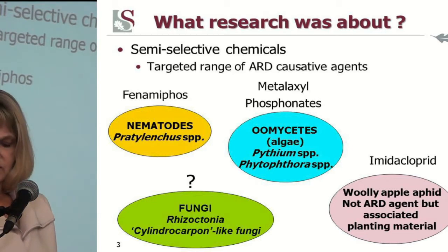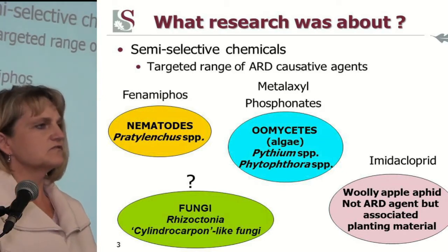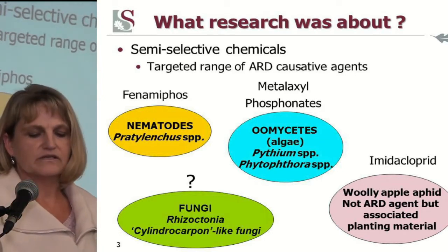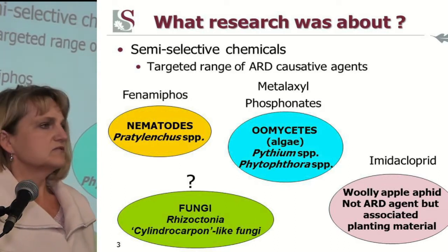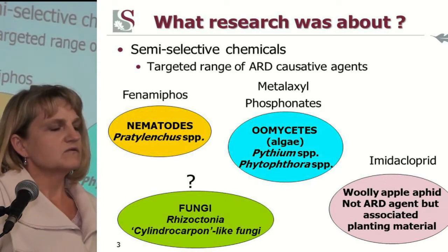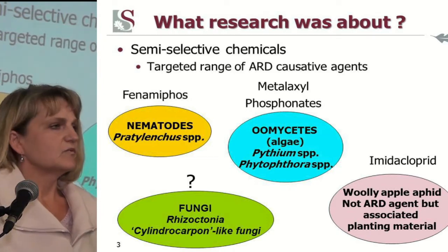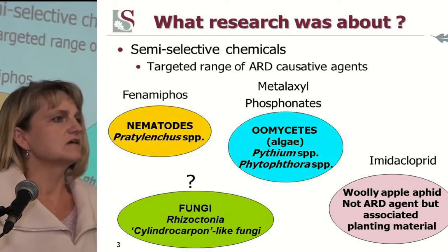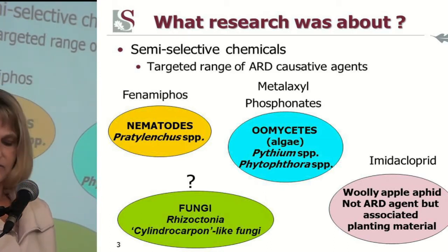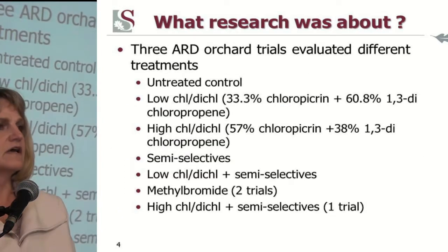The first one was phenomiphose, which targets the nematodes. Then we used metalaxyl and phosphonates, with the phosphonates being used in a three-year program to target the all my seeds. We did not have a chemical to target the fungal component. Additionally, although woolly apple elephant isn't part of the ARD complex, we did include imidacluprit because this insect often is associated with planting materials.